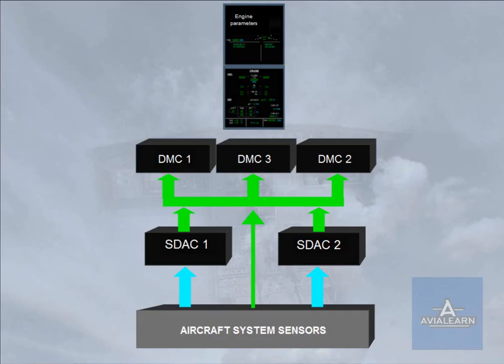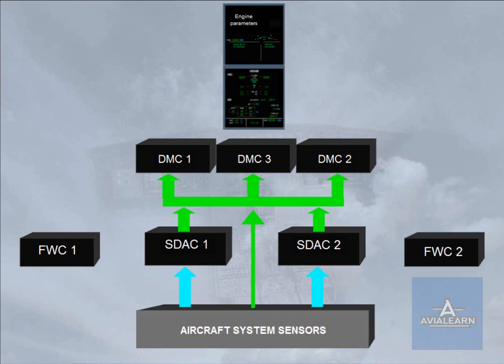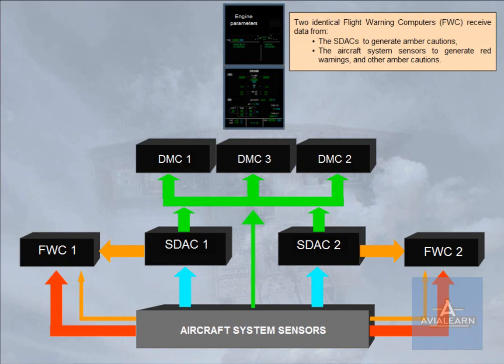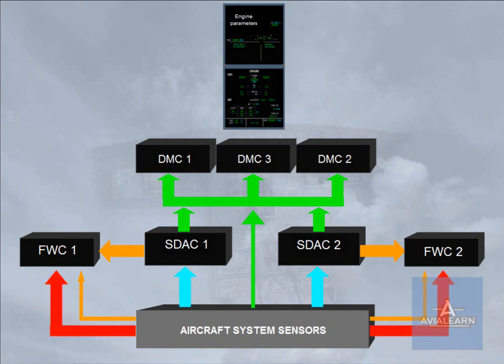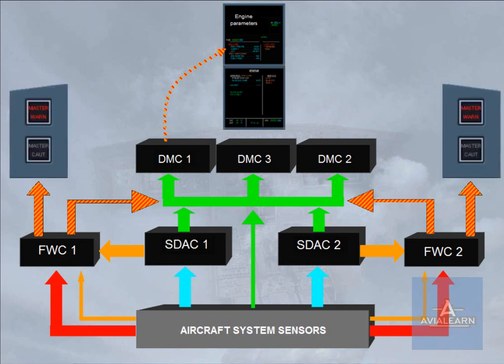Two identical flight warning computers, FWC, receive data from the SDACs to generate amber cautions, and from the aircraft system sensors to generate red warnings and other amber cautions. The FWCs then supply the DMCs for the display of alert messages, the attention getters, and the loudspeakers for aural alerts and synthetic voice messages.